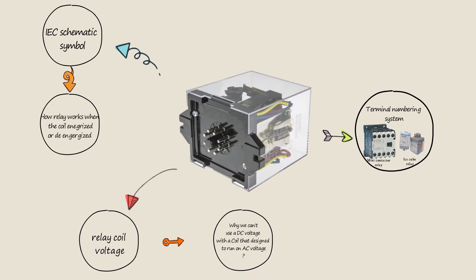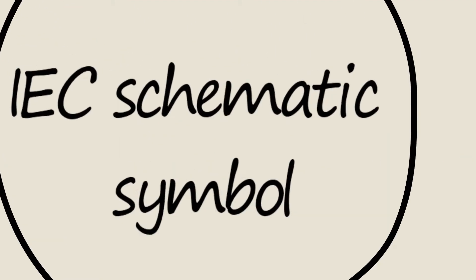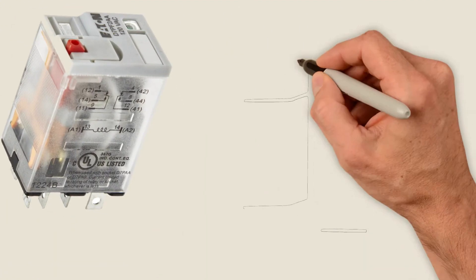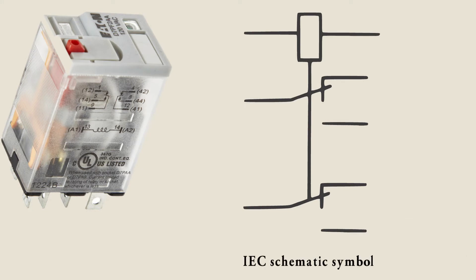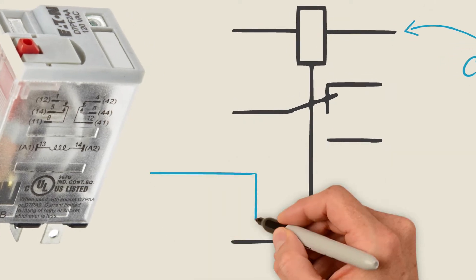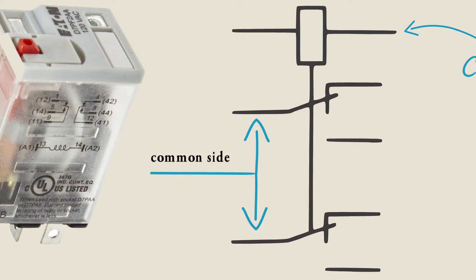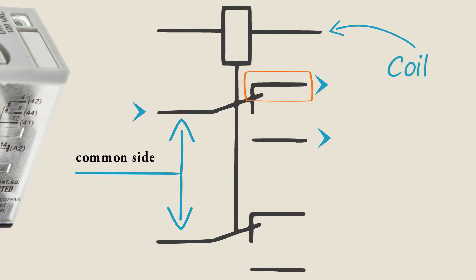First, let's jump into the IEC schematic symbol. This is the IEC schematic symbol for an ice cube relay. This is the coil, and this is the common side for the two single pole double throw switches. This is the normally closed side, and this is the normally open side.